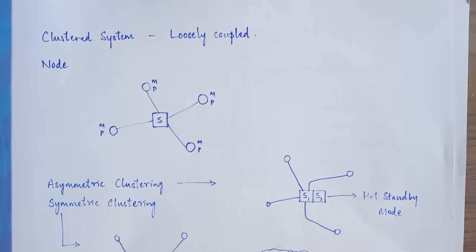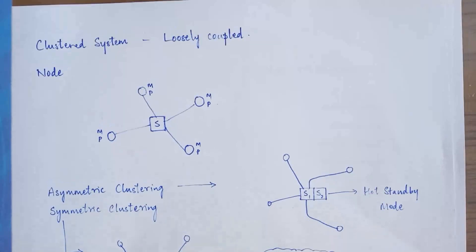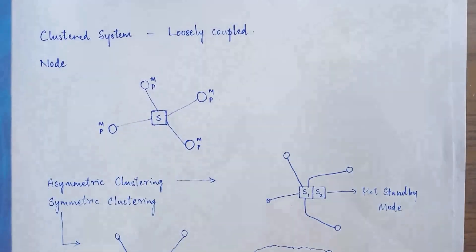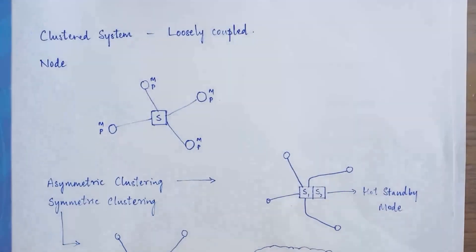Hello everyone. In this video we are going to be studying about the clustered system. In the previous video we saw what multiprocessor systems were — multiprocessor systems are called tightly coupled systems because each multiprocessor system has a single computer and within that computer there are multiple processors, so all those multiple processors are said to be tightly coupled.